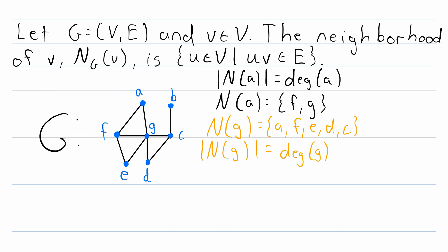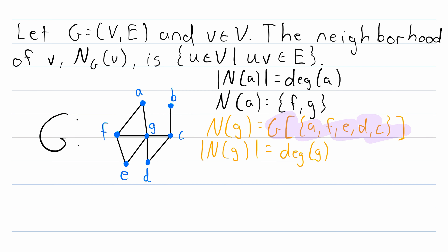This is another lesson where I have to point out there is another definition of neighborhood that is sometimes used. Sometimes the neighborhood of a vertex is defined to be not the set of adjacent vertices, but the subgraph induced by the set of adjacent vertices. So if we were to use that definition with our vertex G, then the neighborhood of G is no longer the set of adjacent vertices, but the subgraph induced by that set. Here is the notation for that — this notation refers to the subgraph of G induced by this vertex set.